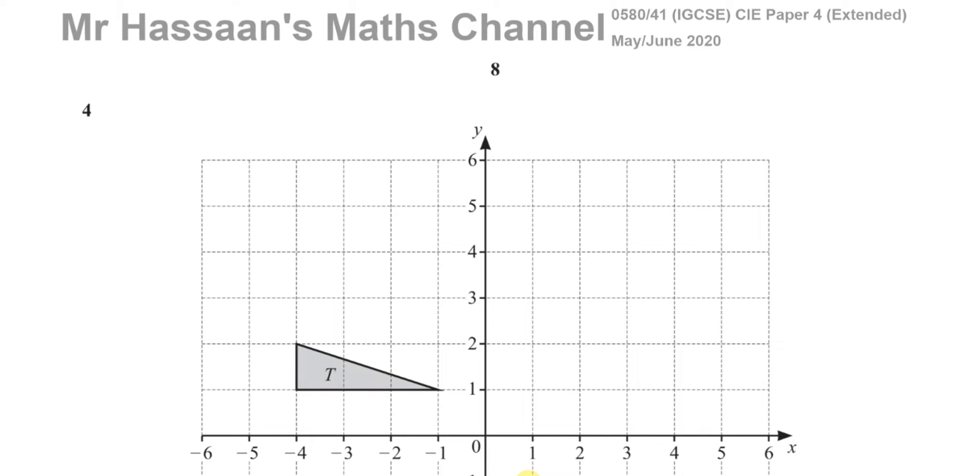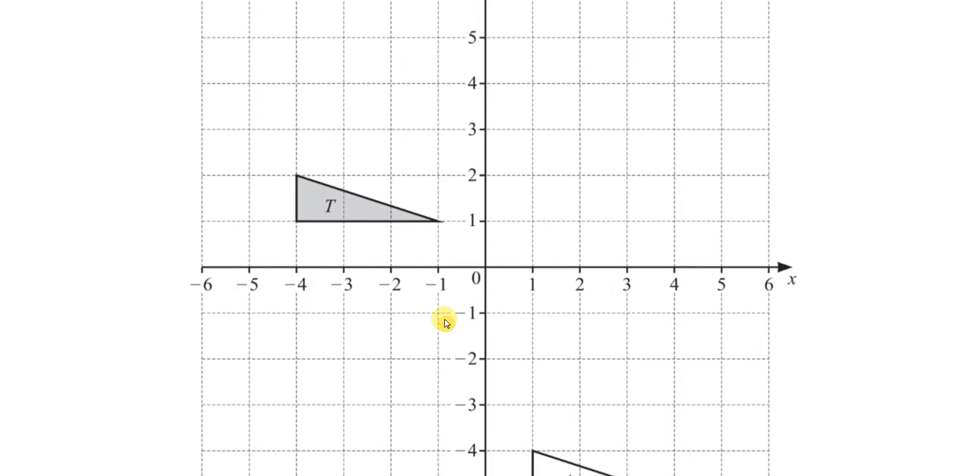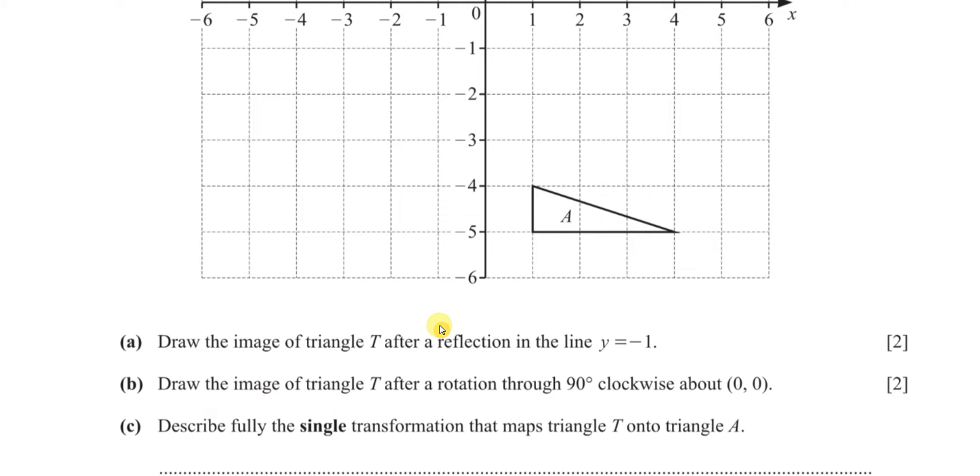Welcome back. I'm now on question number four on Mr. Hassan's Maths Channel for this paper, May June 2020, paper four from the 0580 International GCSE Cambridge exam. This is variant one, paper four. This question here is about transformations. It's a very short question, a couple of parts. So it says, draw the image of triangle T after reflection in the line Y equals minus one.